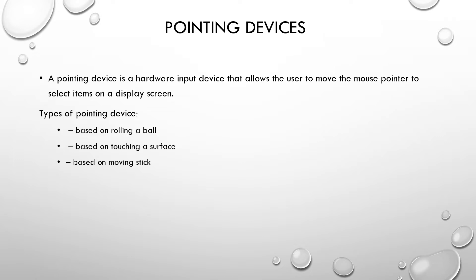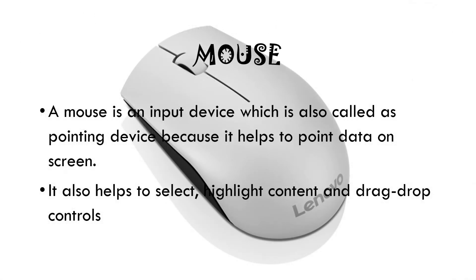The different types of pointing devices include those based on rolling a ball, touching the screen, and moving a stick. Looking at pointing devices based on rolling a ball, we have the mouse and the trackball. A mouse is the device that controls the movement of the cursor or pointer on the display screen. It helps to point, select, highlight, and drag and drop content.